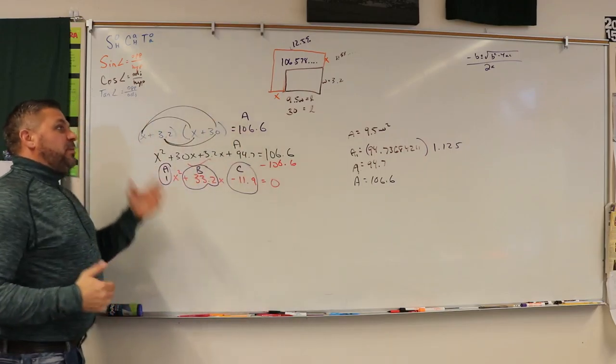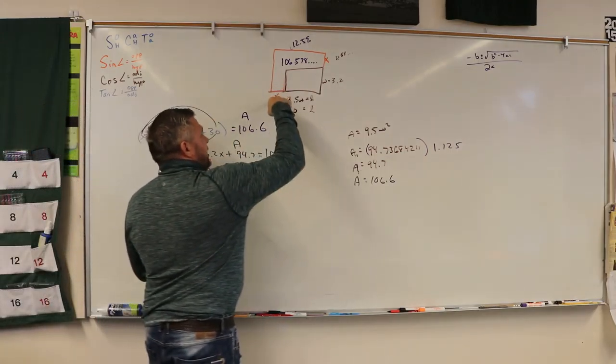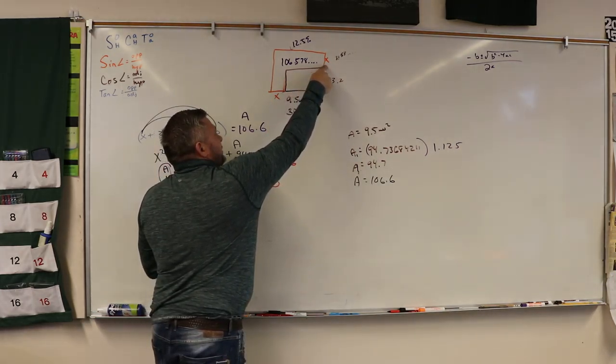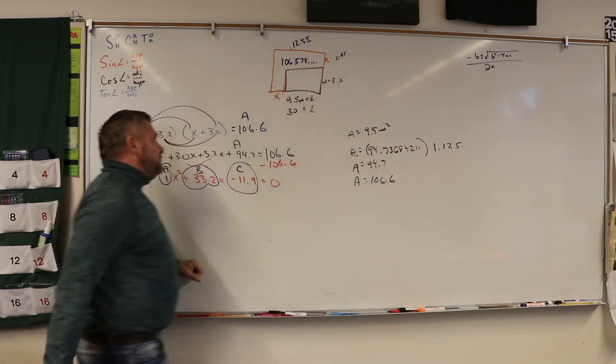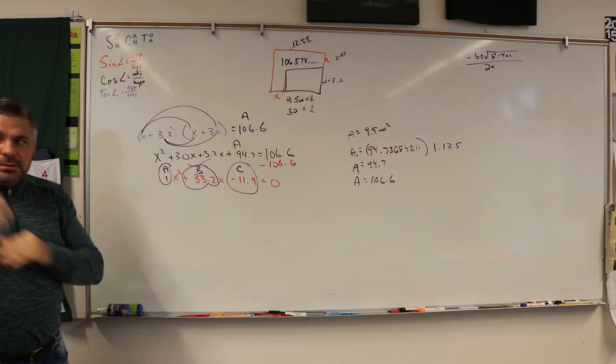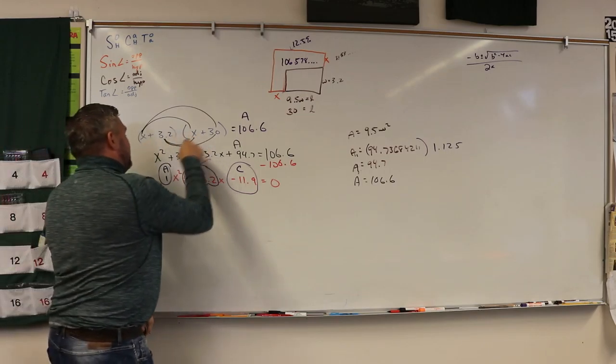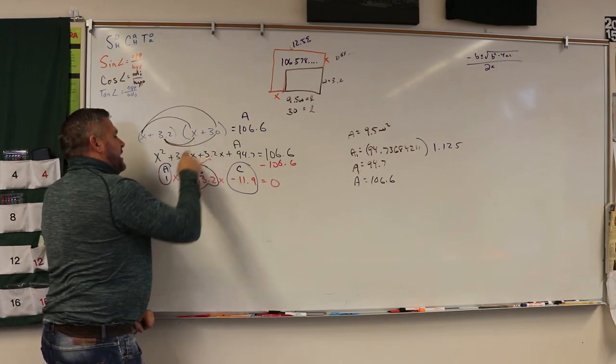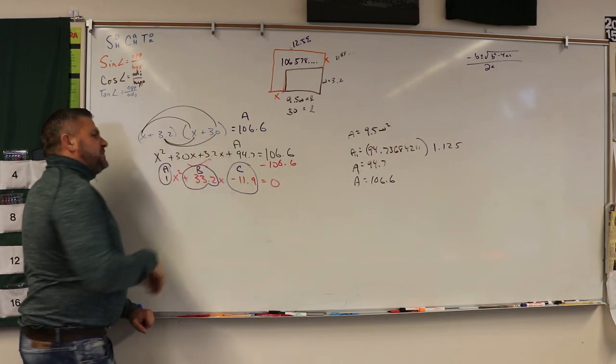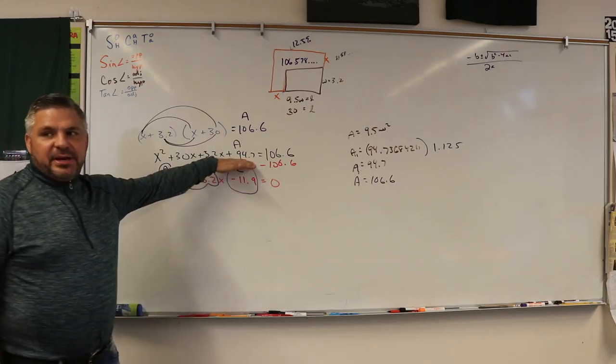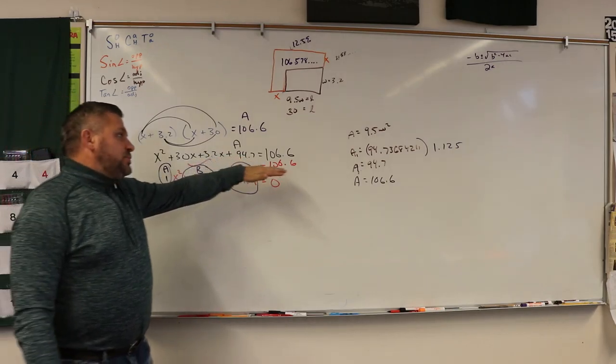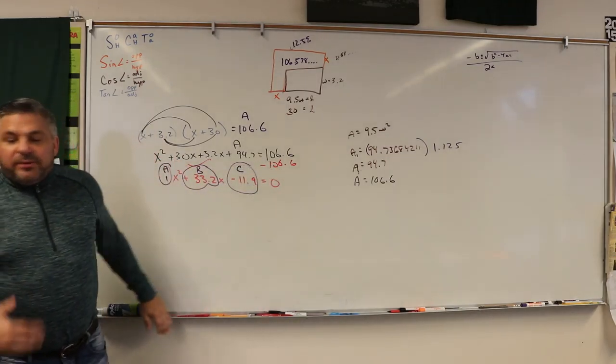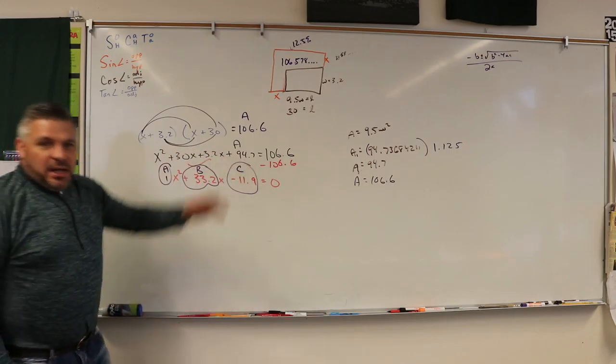Then we do the quadratic formula. We said, hey, x plus 30 times x plus 3.2 should equal x times x is x squared, x times 30 is 30x, 3.2 times x is 3.2x, and 3.2 times 30 should give us back that original area, which is equal to our new area. So, we subtract our new area from our old original area. Hallelujah!